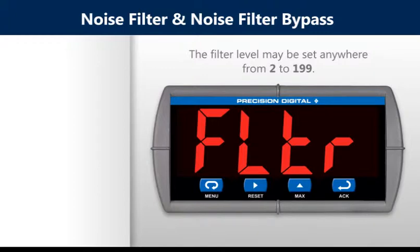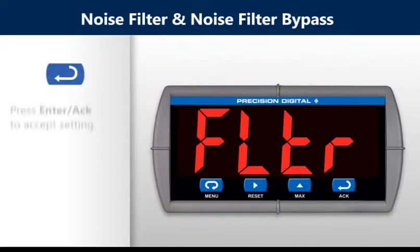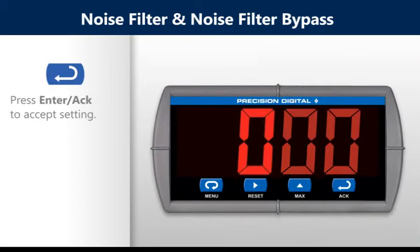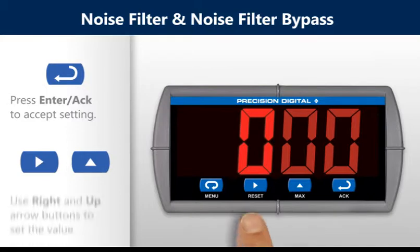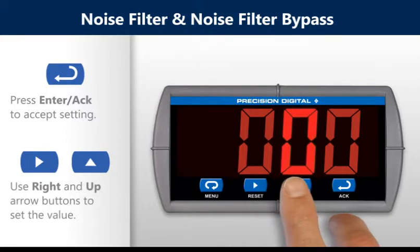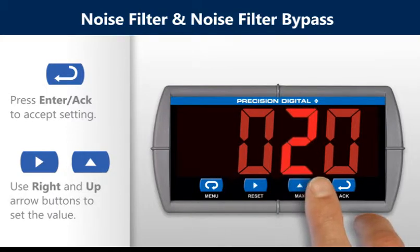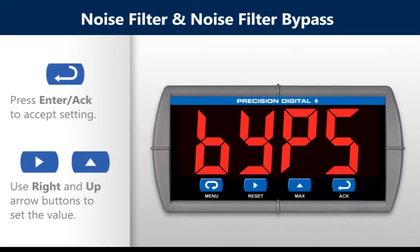To set the noise filter value, press the enter button. Then set the value using the right and up arrow buttons. Press the enter button again to save the setting.